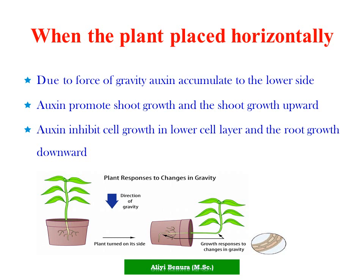Plant responds to change in gravity. When we turn a plant on its side, the growth of the shoot is upward while the growth of the root is downward.